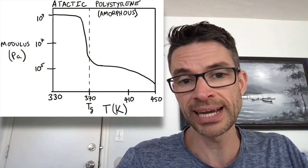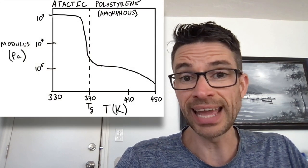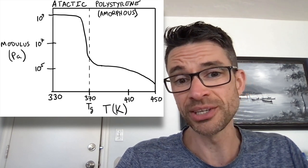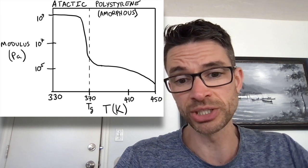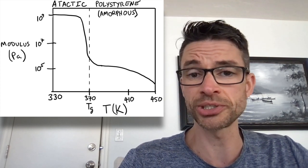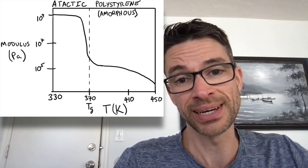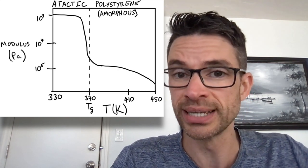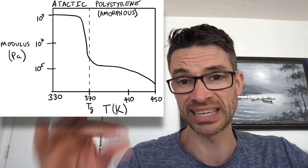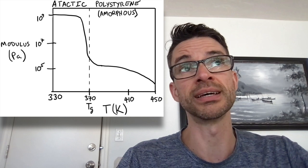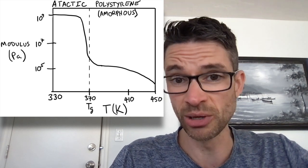Thinking about mechanical properties: if you have an amorphous polymer starting as a glass and you increase the temperature, there's a huge drop-off in modulus around the glass transition temperature. Then it becomes more leathery, then more rubbery, and finally a viscoelastic liquid — a gummy liquid that flows quite slowly but still flows and doesn't maintain its shape.